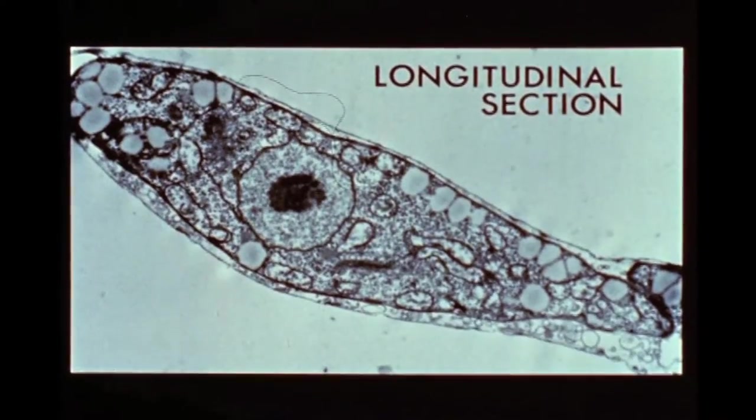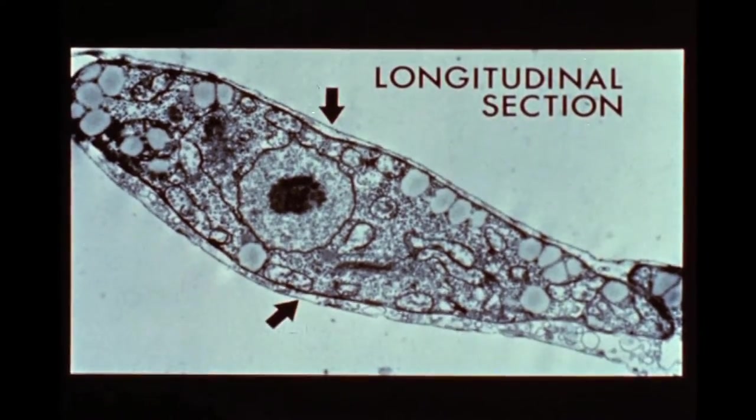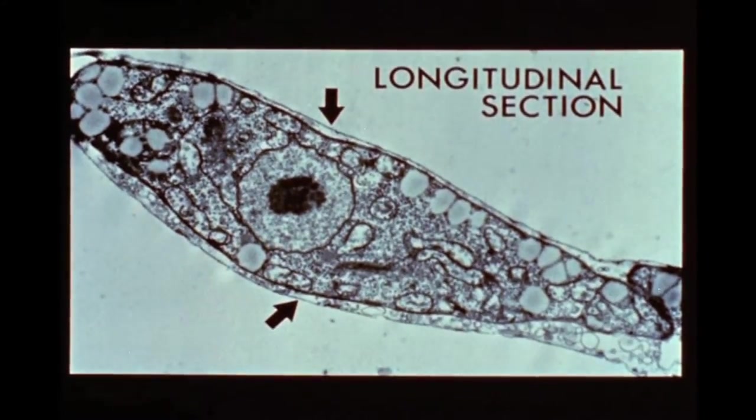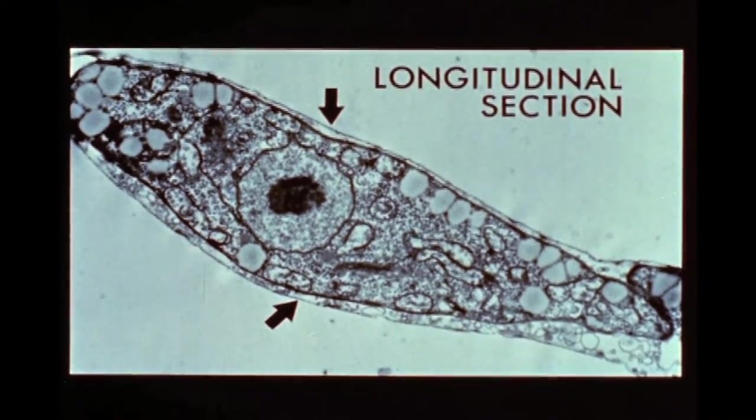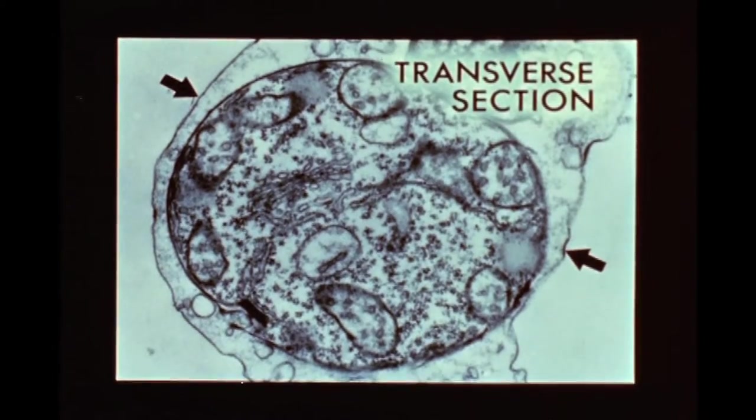Observations with the electron microscope show conclusively that the cells are completely surrounded by the material of the extracellular matrix, in both longitudinal and transverse section.